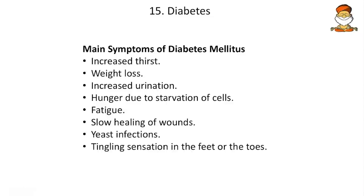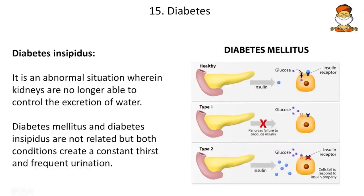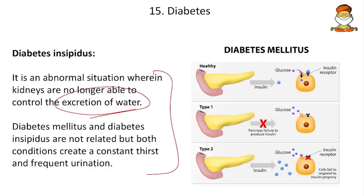Main symptoms of diabetes mellitus: increased thirst, weight loss, increased urination, hunger due to starvation of cells, fatigue and body pain, slow healing of wounds, yeast and fungal infections, and tingling or itching sensation on the feet or toes. Diabetes incipidus is an abnormal situation where the kidneys are no longer able to control excretion of water — related to the kidney, not the pancreas — causing excessive urination. Both types share the same symptoms of thirst and frequent urination, but they are not related.